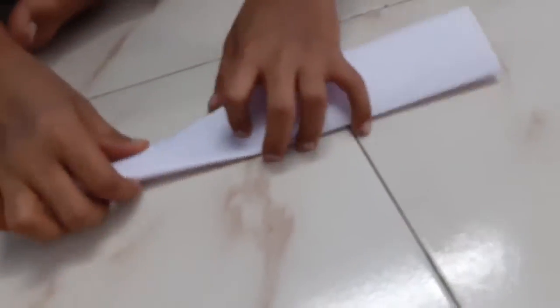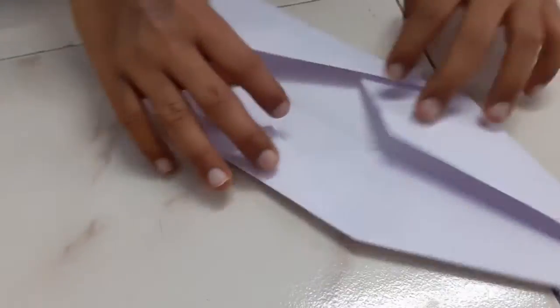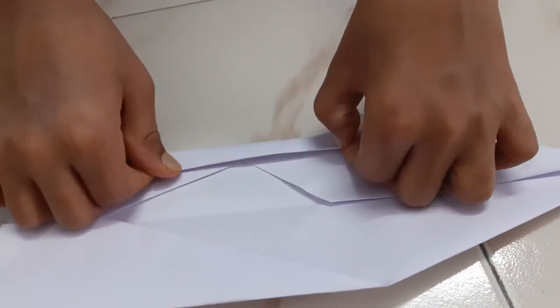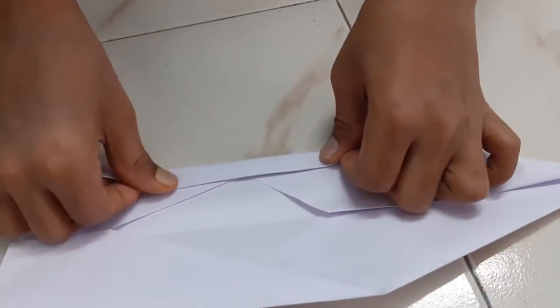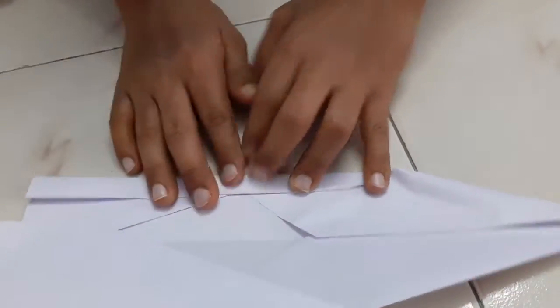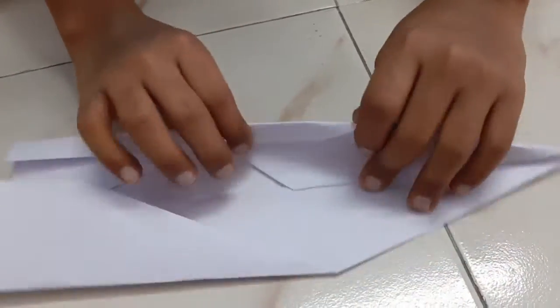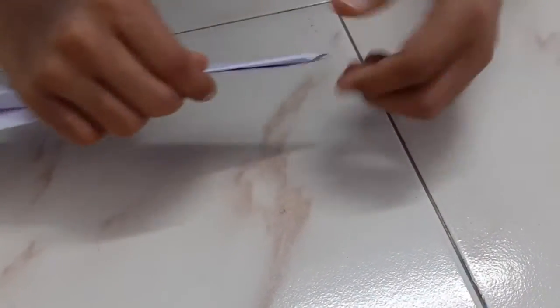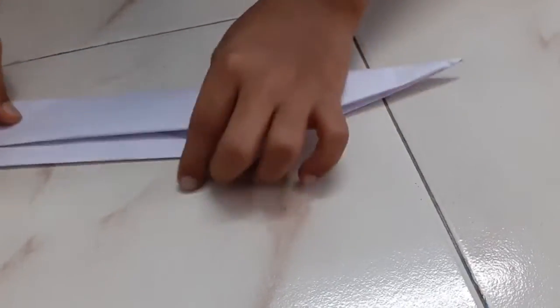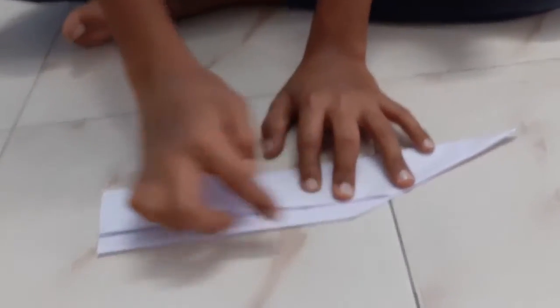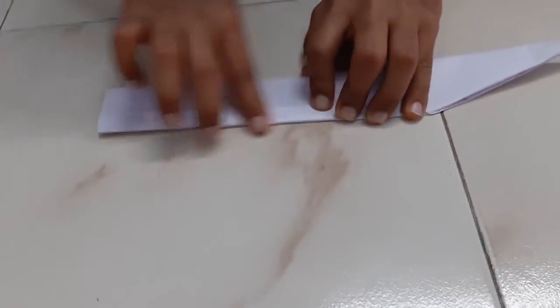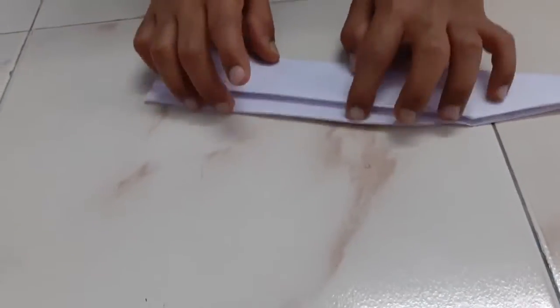Now we will fold it and see this. From one side we will fold it a bit like this. Then we will do this. And then this part which is extra we will get it here and crease it. And then put it inside.